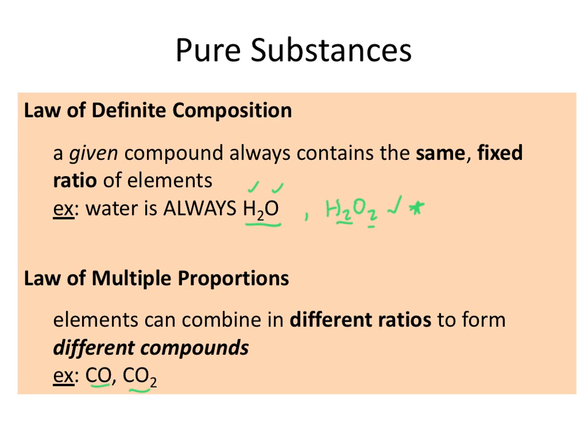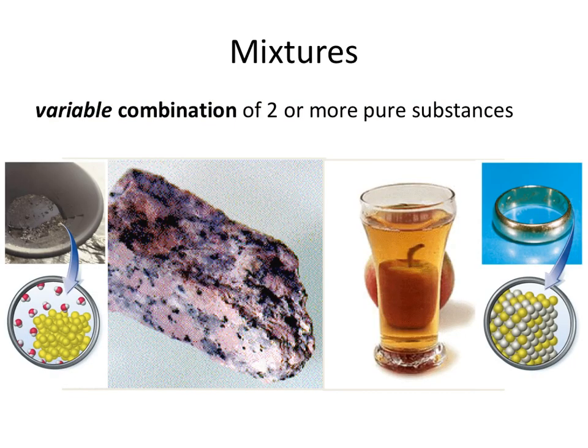Let's go ahead and look at the other side of the matter flowchart. Mixtures are basically a combination of two or more pure substances — whether elements and compounds or compounds and compounds. As long as you have a variable combination of the two, you end up with what is called a mixture.